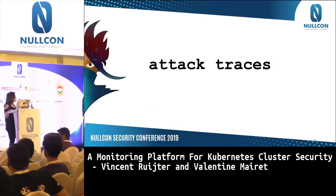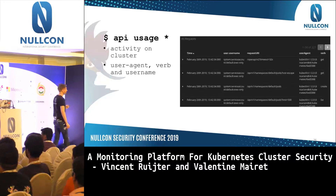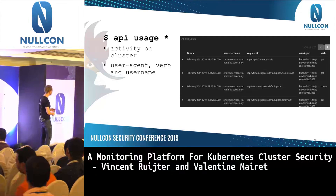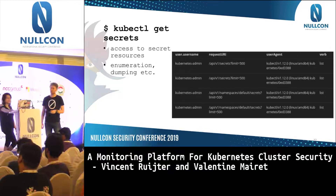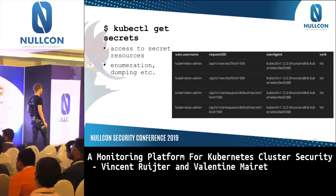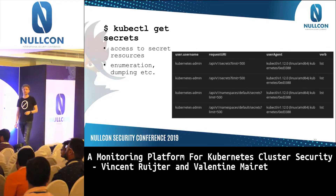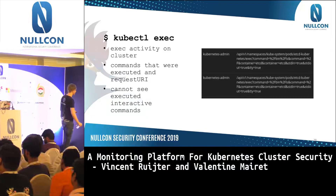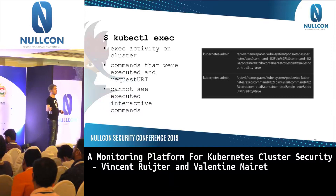There are some traces we can show from what I call attack traces. When doing a Kubernetes assessment, the kubectl binary is a post-exploitation tool — you can download it statically from the website. From common API usage you can see the user agent, the request URI, the Kubernetes method, and the username. You can also see when people try to obtain secrets — they're mainly done with the kubectl application because of the user agent header. You can make rules for enumeration or dumping of secrets, because that's what an attacker will do when trying to do lateral movement in the cluster.